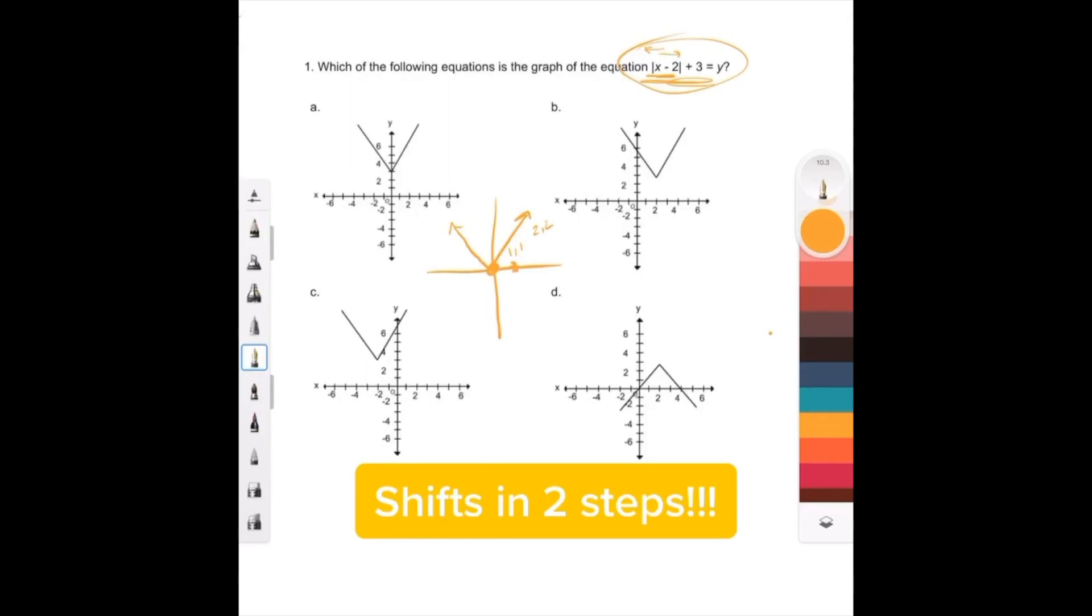Okay, so that's not this one, that's not this one. It's got to be this or this, and we know that it has to be answer choice B because it's not upside down. For it to be upside down, the absolute value would have to be negative on the outside.